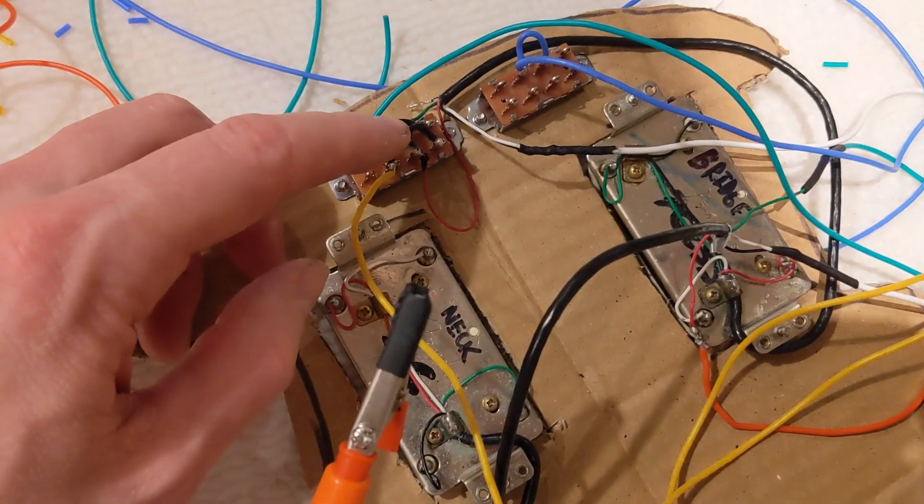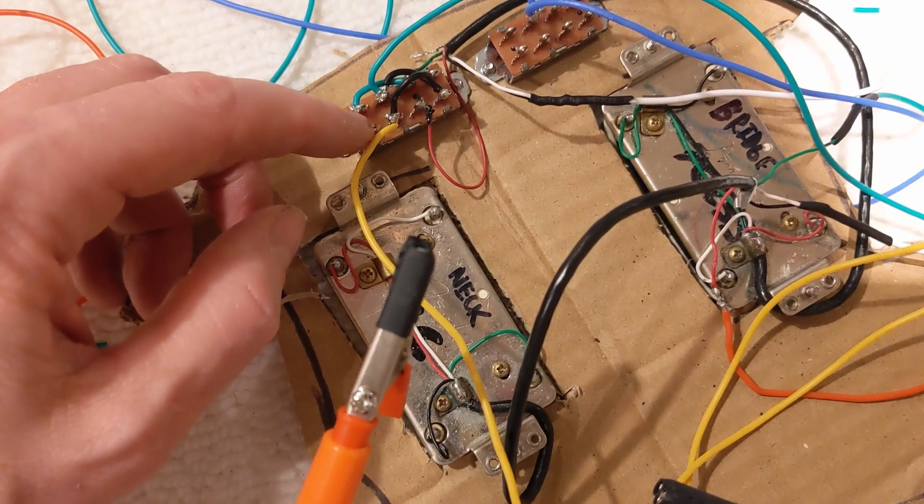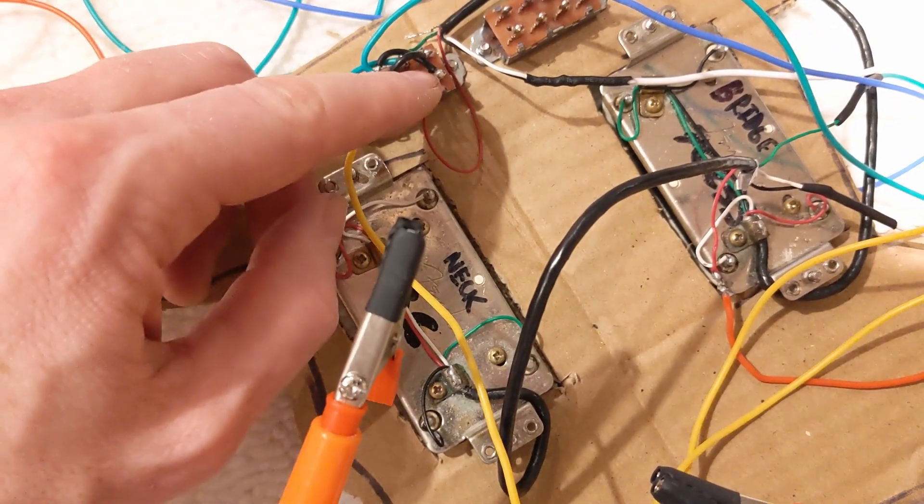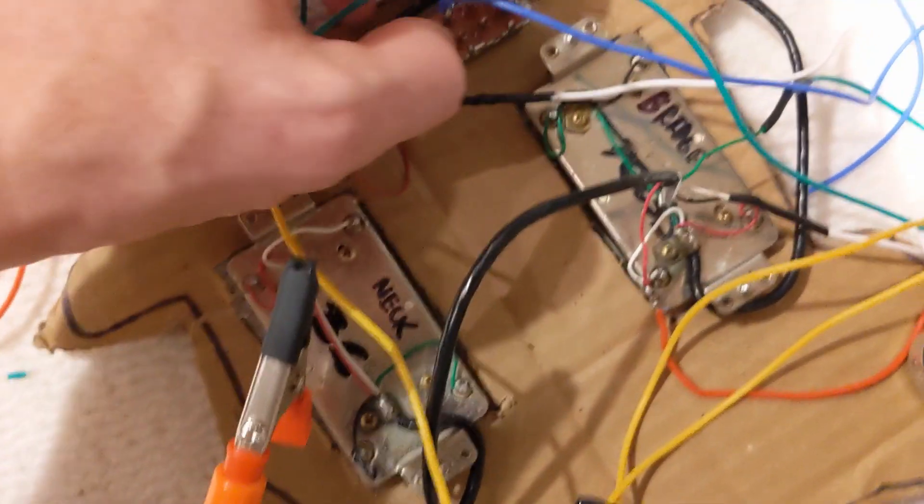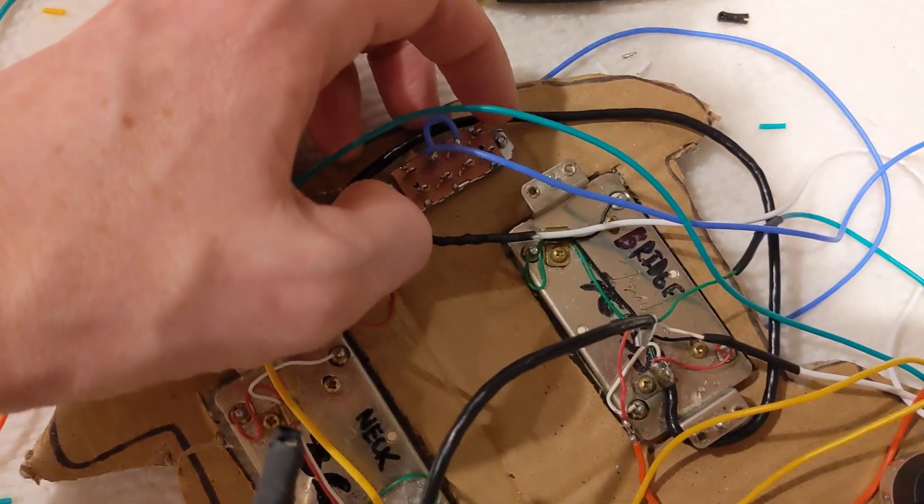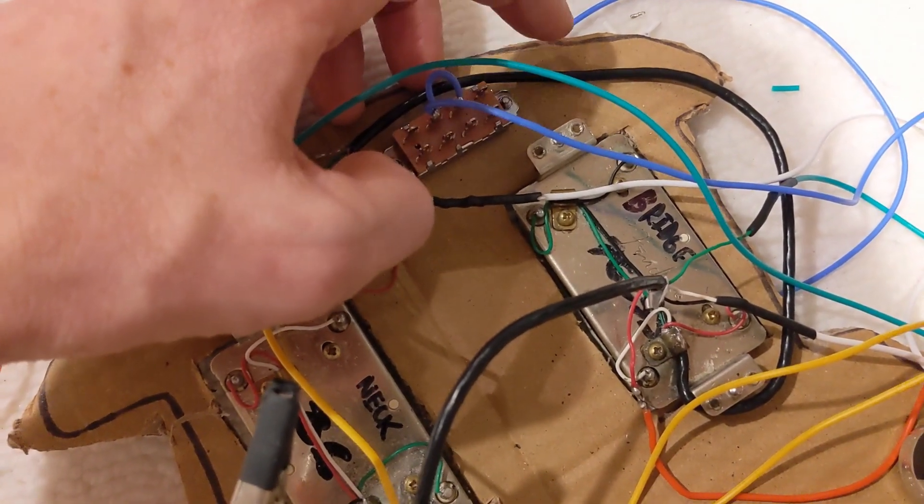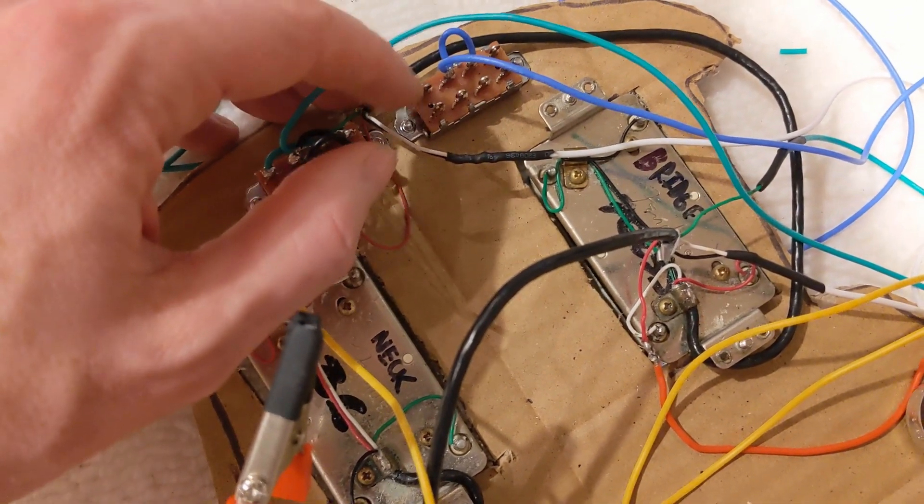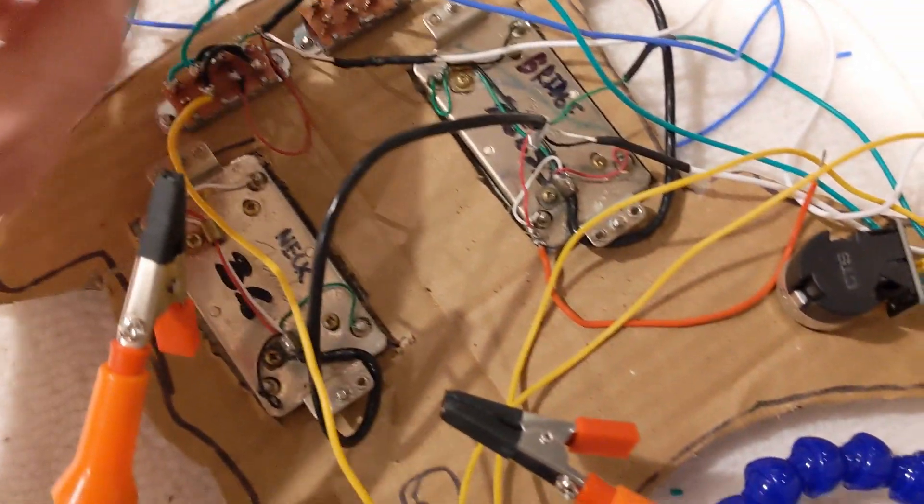You can see this is the phase switch. So I'm going to put a .022 across here as a kind of base cut. This will be the distortion diodes. Not sure what I'll use yet. Put them in a red board, see what it sounds like. And then this will be the treble cut, basically.